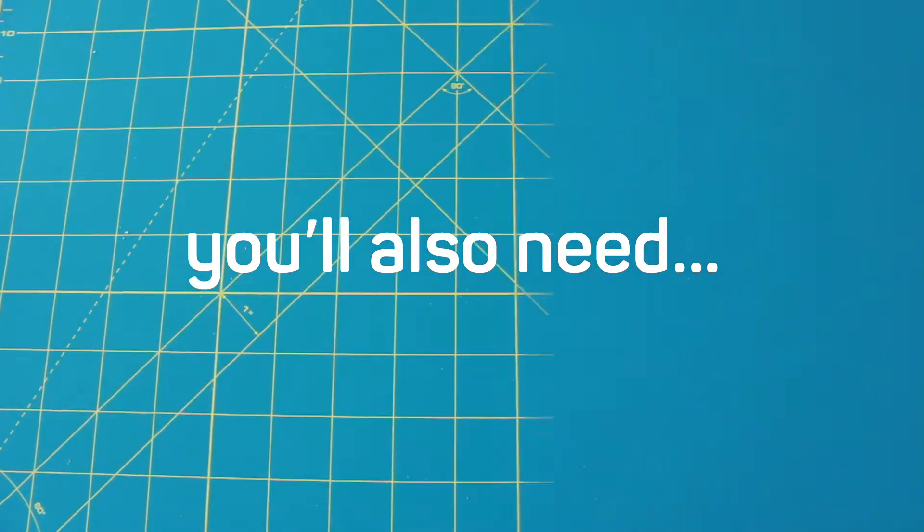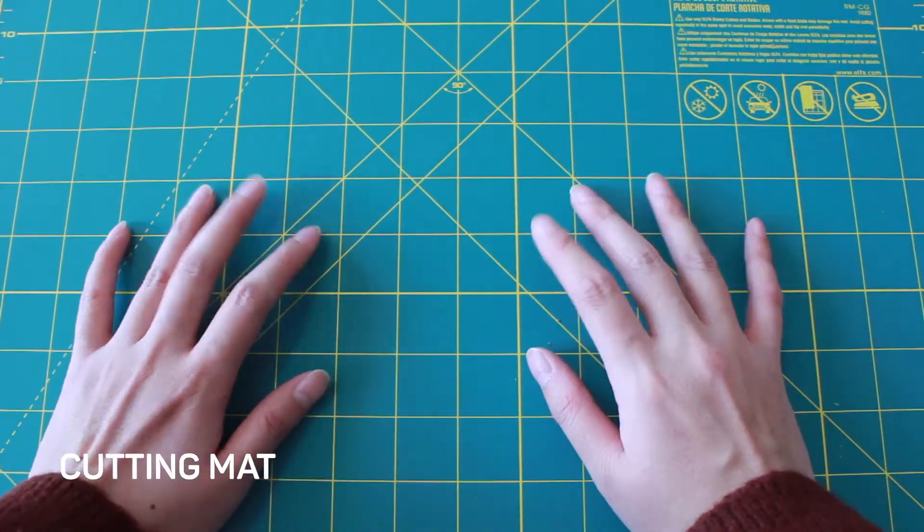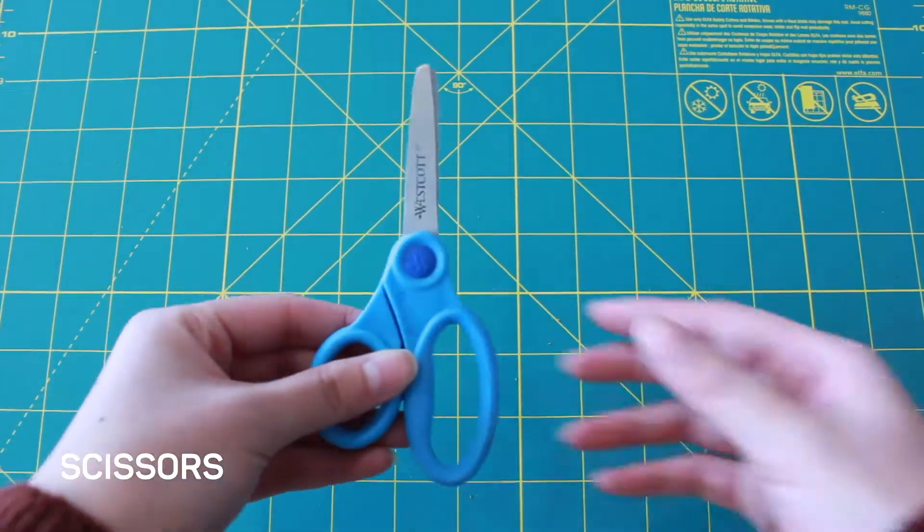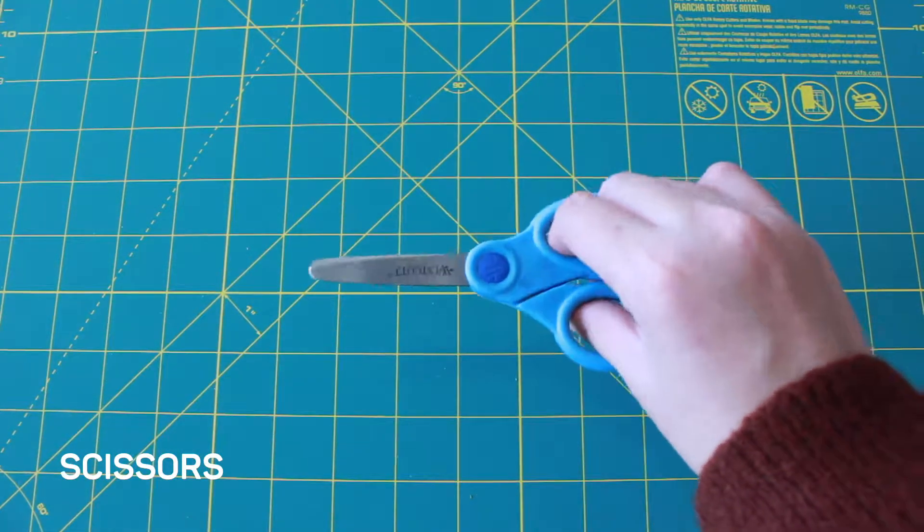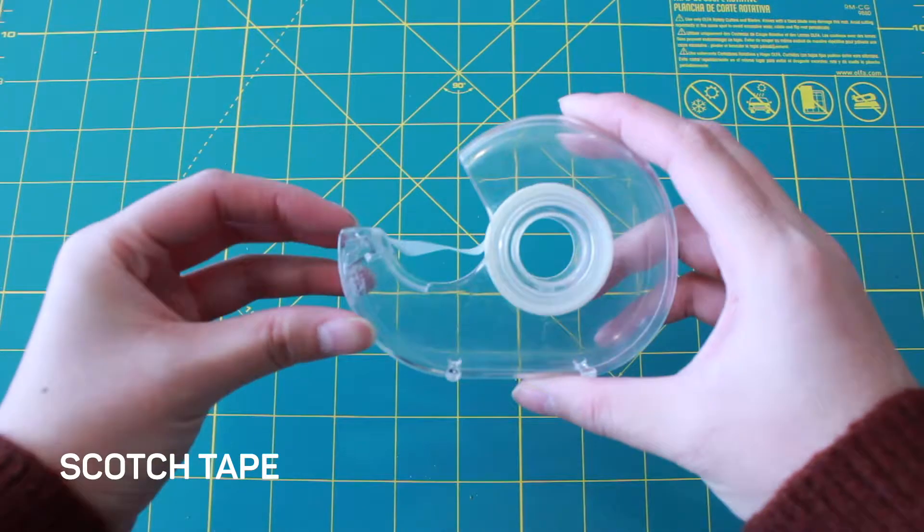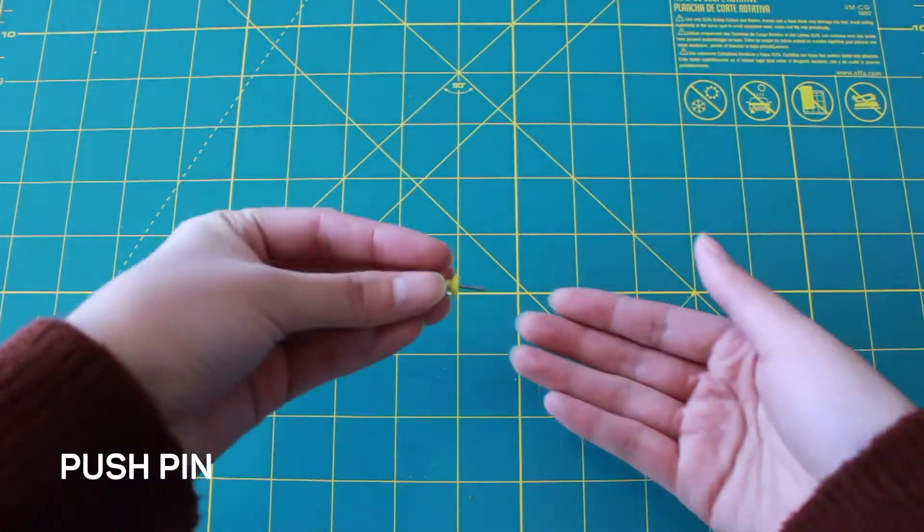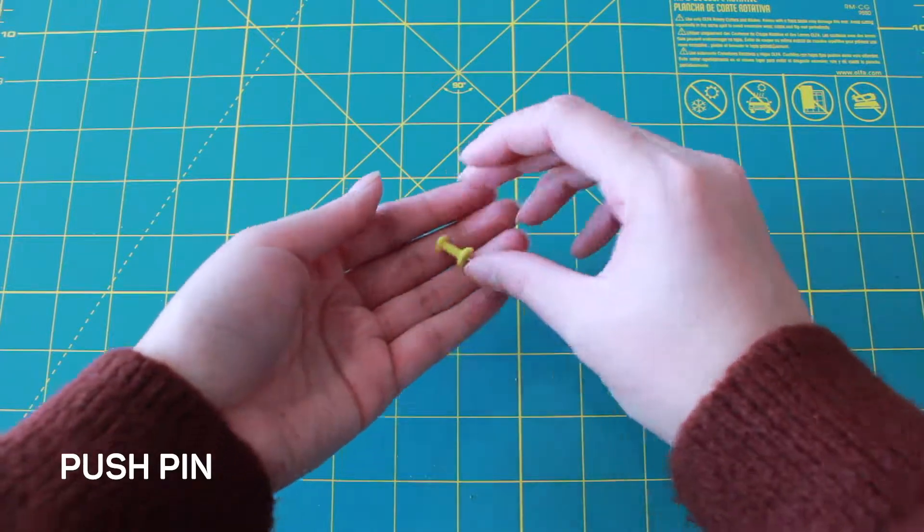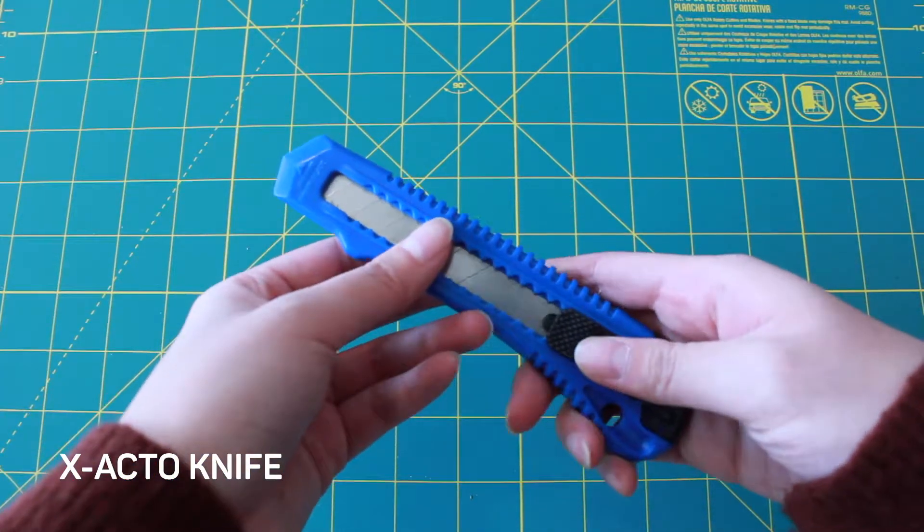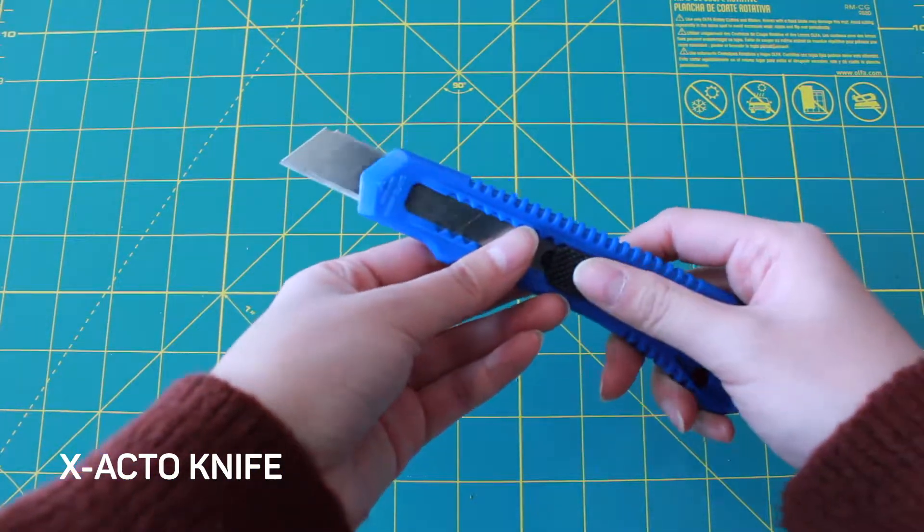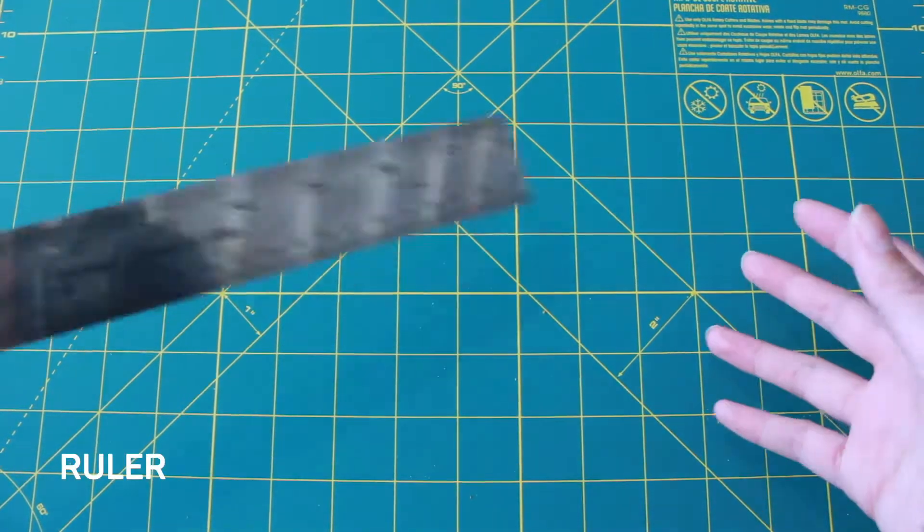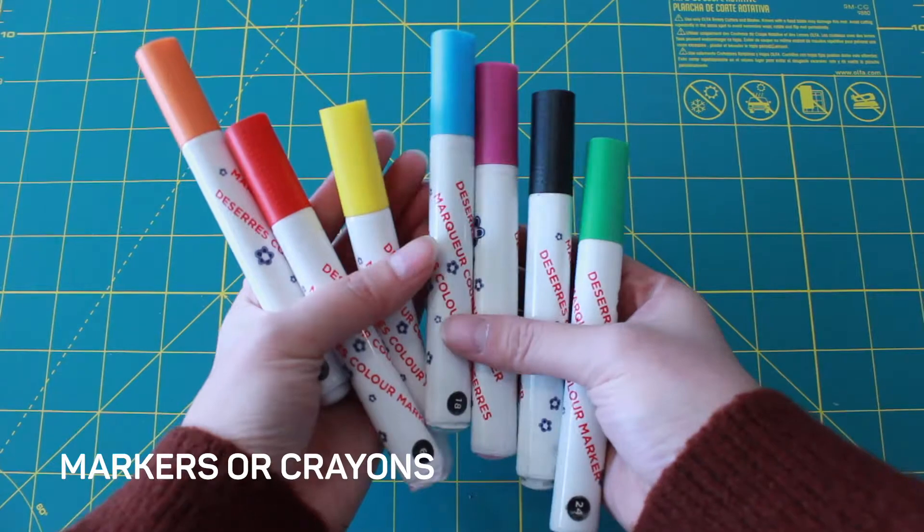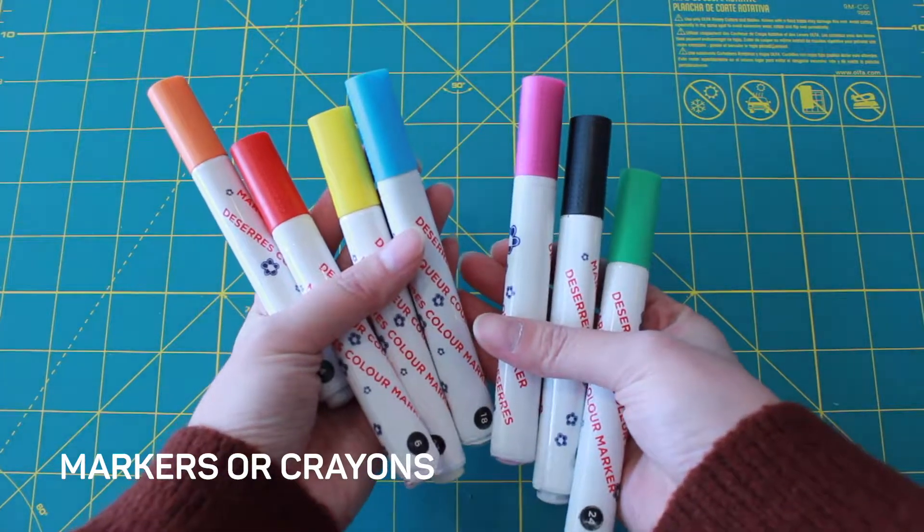Here are some other tools you'll also need. A cutting mat, like this one here, wire cutters, scissors, scotch tape, one pushpin, an exacto knife, a ruler, and markers or pencil crayons to decorate.